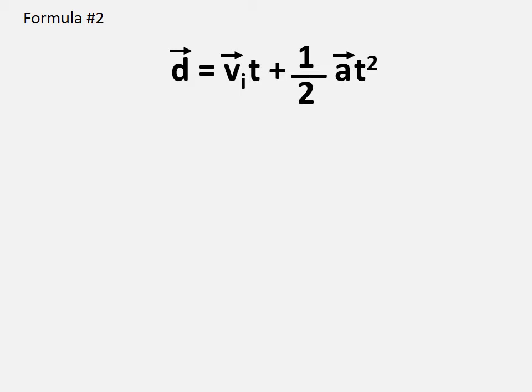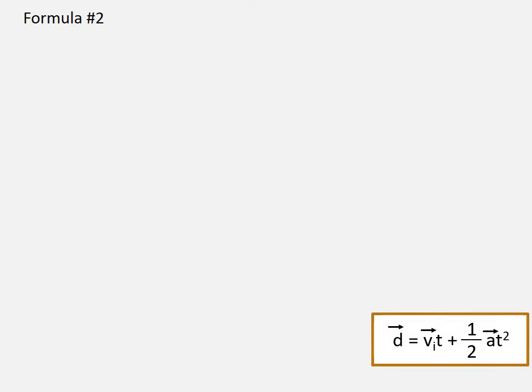Now for formula number two: displacement equals initial velocity multiplied by time plus half AT squared, i.e., D = VIT + ½AT². We are going to derive this from three formulas we've accepted as true: average velocity equals displacement divided by time; average velocity equals (VI + VF) / 2 for constant acceleration; and acceleration equals change in velocity divided by time.